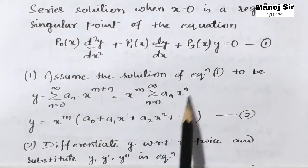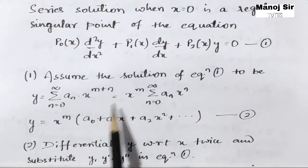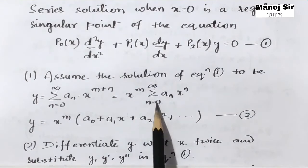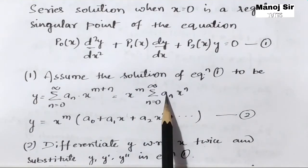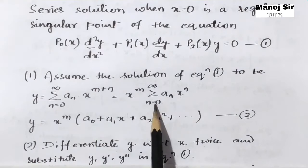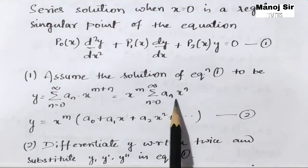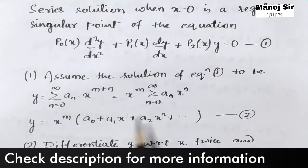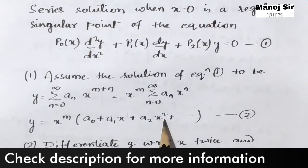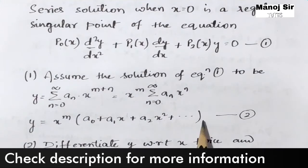Now we are going to expand this. That is y equals x to the power m times: putting n equal to 0 gives a0 x to the power 0, that is a0; put n equals 1 gives a1 x; put n equals 2 gives a2 x squared; plus dot dot dot. Let this be equation number 2.